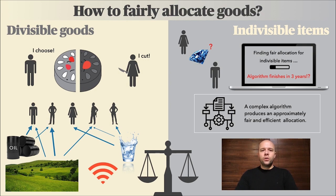Previously we only mentioned cakes and land, but fair division arises everywhere — whether that's water reserve management, obligations in climate agreements, or access to broadband networks. The last one especially underlines the importance of fast algorithmic solutions.